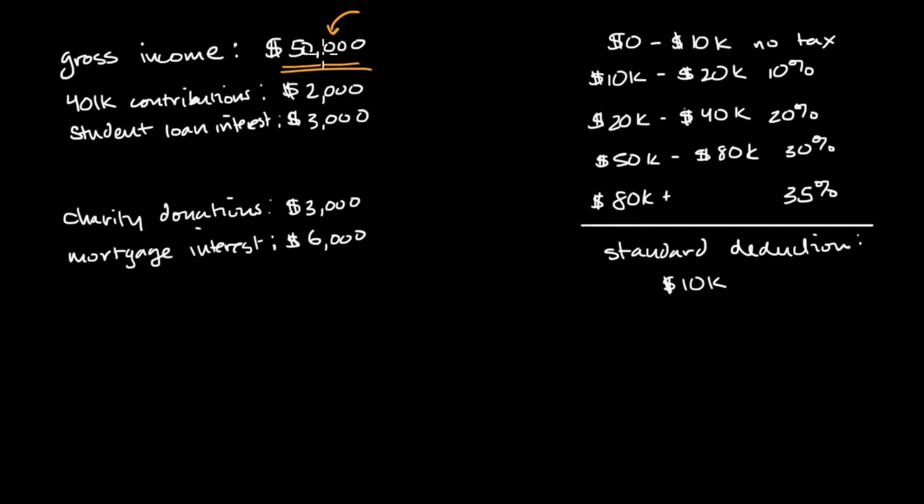Now, you aren't taxed on your gross income just as is. Typically, you are going to adjust it to figure out what your taxable income is. And then you will go and look at the various tax brackets and calculate your taxes.